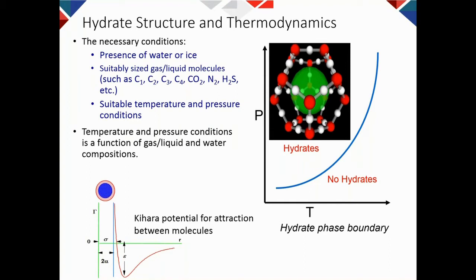Suitable temperature and pressure conditions are represented by a curve. To the right of the curve we don't have hydrate; to the left we have hydrate. The position of this curve depends on the composition of the hydrocarbon phase and the composition of the water phase. The position of the water molecule in the structure is relatively fixed, so how close the gas molecule is to the water molecule depends on the size of the gas molecule.